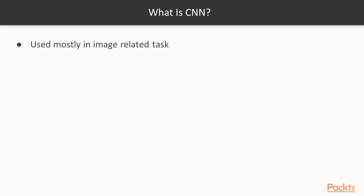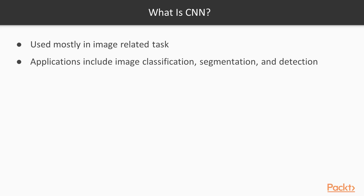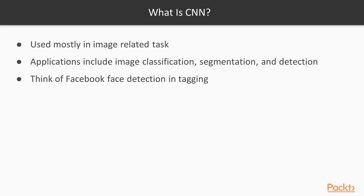Convolutional Neural Networks are used for image-related tasks. CNN has wide applications that mostly include classification, segmentation, and detection of images. A very basic example that we can all relate to is Facebook face detection. Whenever you put a picture on Facebook, it will try to detect the face and tag that person, using a Convolutional Neural Network to detect a face from an image.